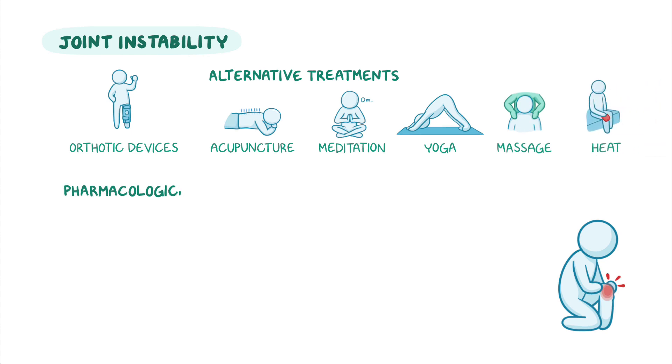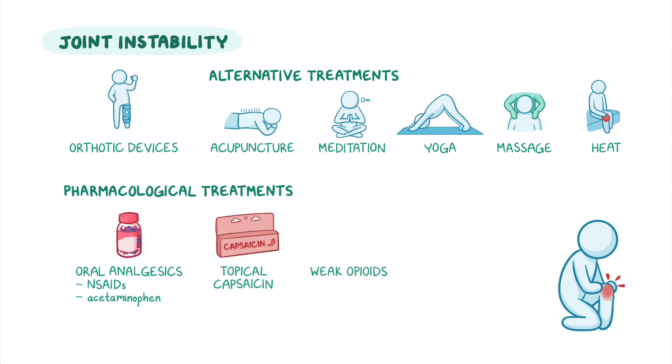Next, pharmacological treatment is mainly symptomatic, focusing on reducing pain by using oral analgesics, like NSAIDs and acetaminophen, topical capsaicin, or weak opioids like tramadol. Some clients might also benefit from injections of corticosteroids into the joint.